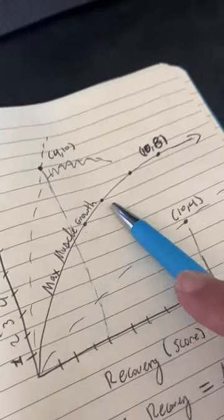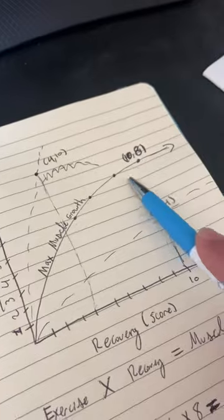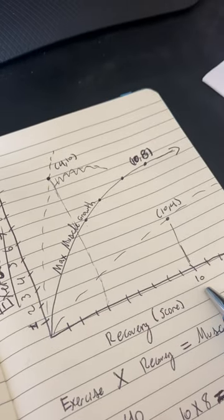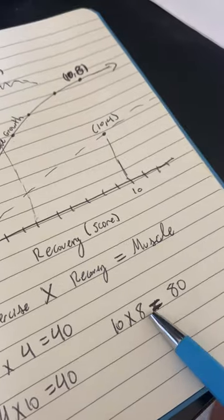This maximum muscle growth line here that we see, where we can still work out at an exercise intensity of eight out of 10 and still recover to the best of our ability, possibly even a 10 out of 10. You can see how that number now goes to 80. We can double our muscle potential.